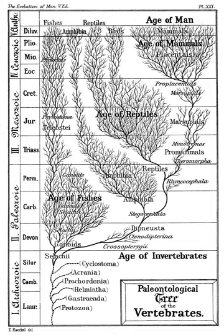Such a view can seem to contradict the fossil record, which often shows evidence of new species appearing suddenly, then persisting in that form for long periods. In the 1970s, paleontologists Niles Eldredge and Stephen Jay Gould developed a theoretical model that suggests that evolution, although a slow process in human terms, undergoes periods of relatively rapid change, ranging between 50,000 and 100,000 years, alternating with long periods of relative stability. Their theory is called "punctuated equilibrium" and explains the fossil record without contradicting Darwin's ideas.